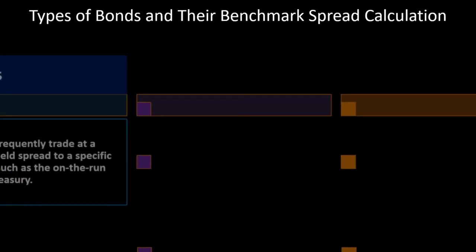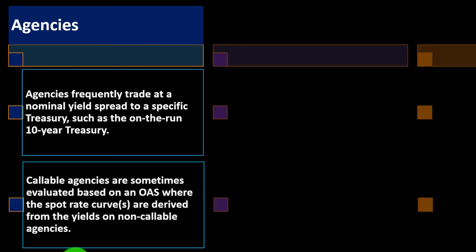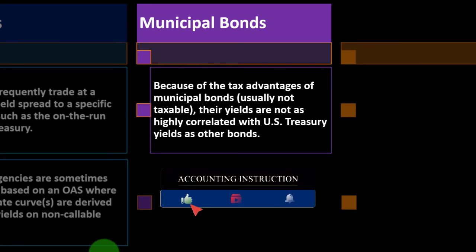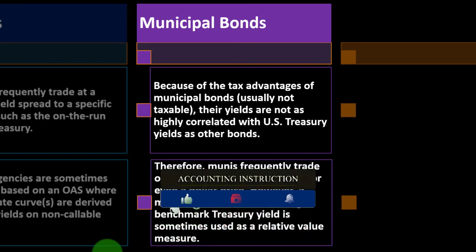Asset-backed securities (ABS) frequently trade at a nominal yield spread at their weighted average life to the swap curve. Agencies frequently trade at a nominal yield spread to a specific treasury such as the on-the-run 10-year Treasury. Callable agencies are sometimes evaluated using an OAS, where the spot rate curves are derived from the yields on non-callable agencies.